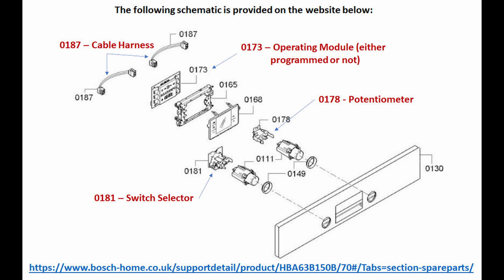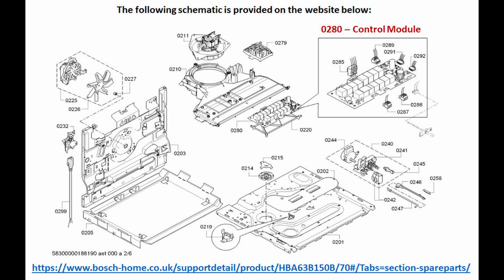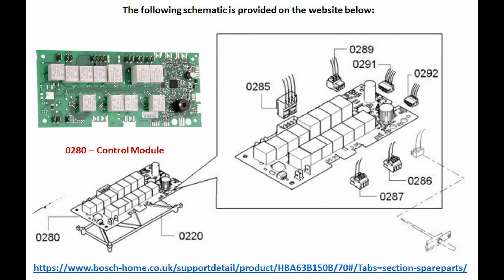The next slide shows the schematic of the front fascia and the components that sit behind it. The switch selector is 0181, and behind that lies the PCB, though this is not shown in that slide. The following slide shows the control module PCB and its position in the back of the oven. The next slide shows a magnified image — this is the picture magnified of the control module PCB, and up in the left hand corner is an image taken from the website showing what the PCB looks like.